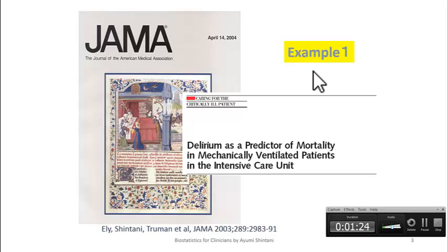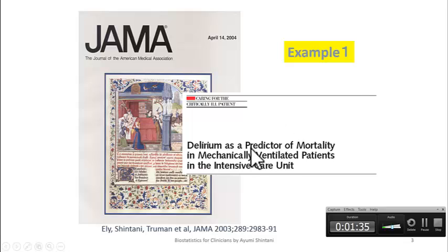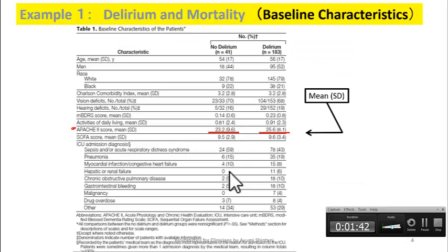This is an example from a real-life research we published in JAMA in 2004. We tried to show delirium as a predictor of mortality in mechanically ventilated patients in the intensive care unit. Today, we look at the baseline characteristics table of that paper, using Apache as an example.